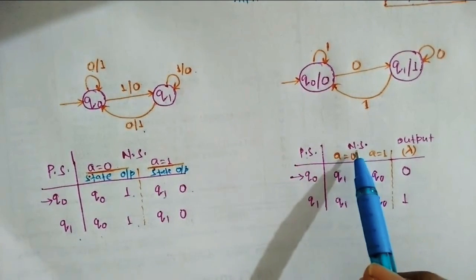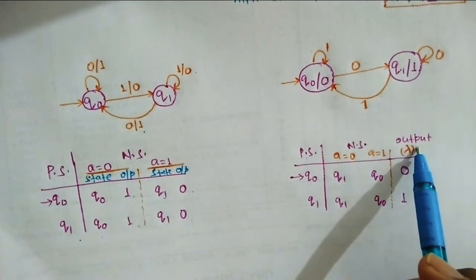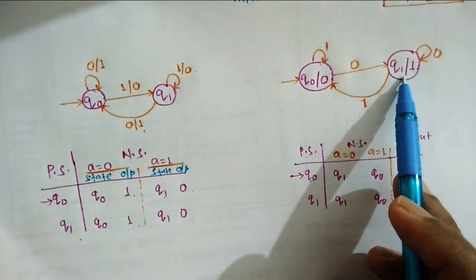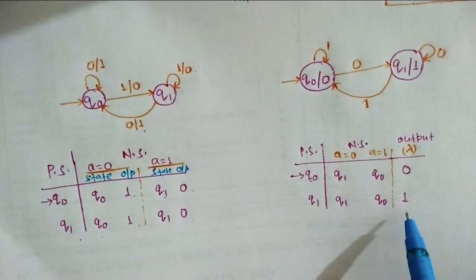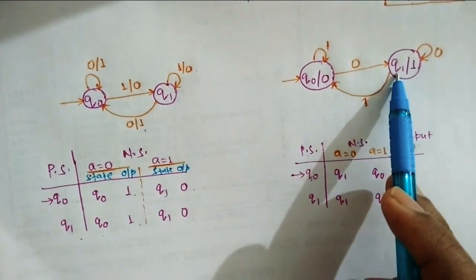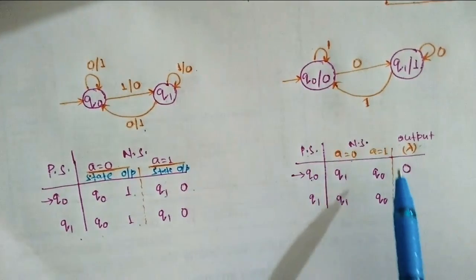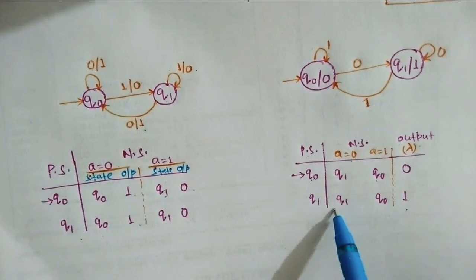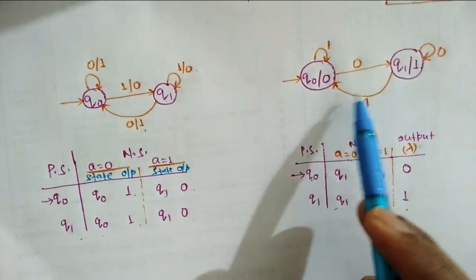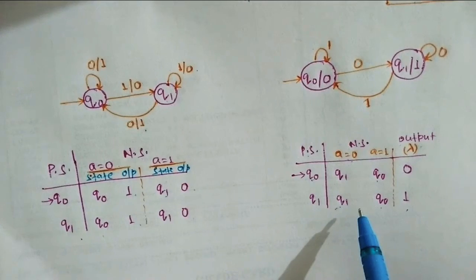For the Moore model transition table, we have the present state, next states for various inputs, and finally the output column. The output of q0 is 0 and the output of q1 is 1, written directly in the output column. For input a=0, q0 goes to q1; for input 1, it goes to q0. Similarly, for state q1, for input 0 it stays at q1, and for input 1 it goes to q0.